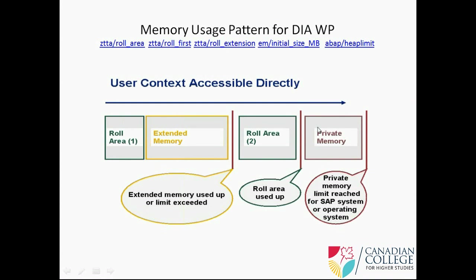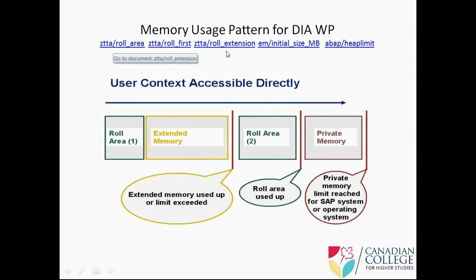Role extension and initial size: EM initial size is extended memory size. Role extension is how much memory a work process can use in this extended memory. If extended memory is 500 megabytes, this process can use only 100 megabytes — so that is 100 megabytes.